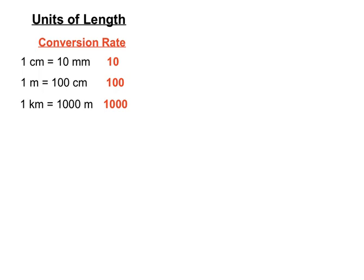Those are the conversions for units of length. With units of area, we use square units — square millimetres, square centimetres, square metres, square kilometres and so on. Because we're using square units, the conversion rates between the normal units get squared when we're using square units instead. I'll show you what I mean.